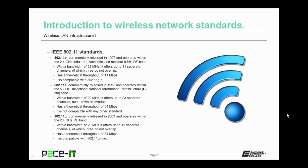Then there's 802.11a. It was also commercially released in 1997 and operates within the 5 gigahertz Unlicensed National Information Infrastructure, or U-NII, radio frequency band. It offers up to 23 separate channels that offer a bandwidth of 20 megahertz each. None of the channels overlap. 802.11a has a theoretical throughput of 54 megabits per second. It is not compatible with any other standard.